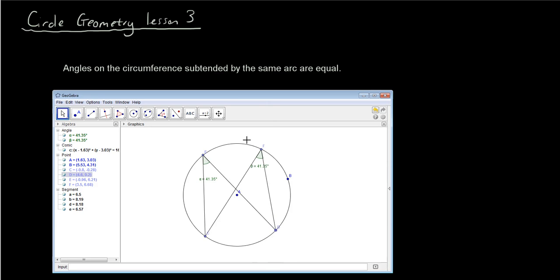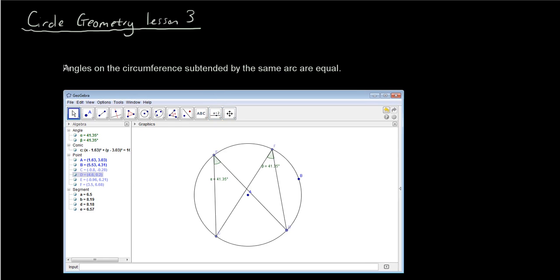This satisfies the rule that angles on the circumference, which are these two angles, subtended by the same arc, which is arc C to D, are equal.